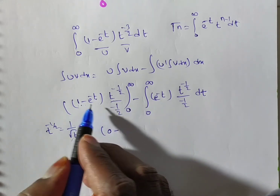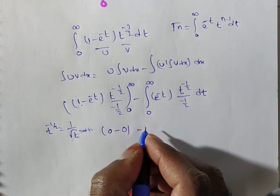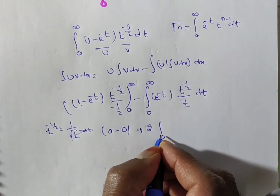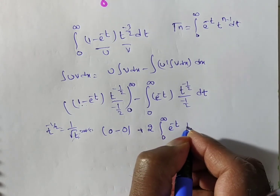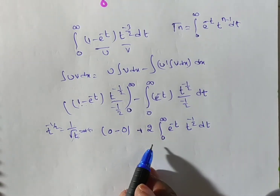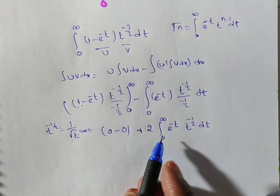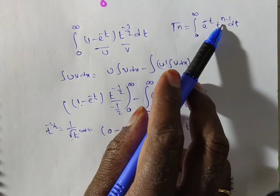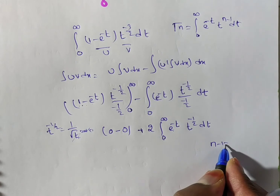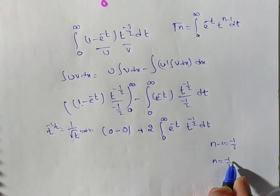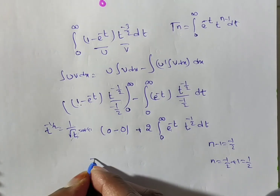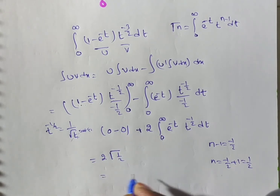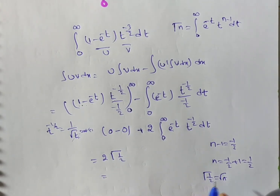After the boundary term vanishes, we are left with minus times minus 1 by 2, which gives 2 times the integral from 0 to infinity of e to the power minus t into t to the power minus 1 by 2, dt. Comparing with the gamma function: t to the power (n minus 1) equals t to the power minus 1 by 2, so n minus 1 equals minus 1 by 2, giving n equals 1 by 2. Therefore this equals 2 times gamma of 1 by 2.